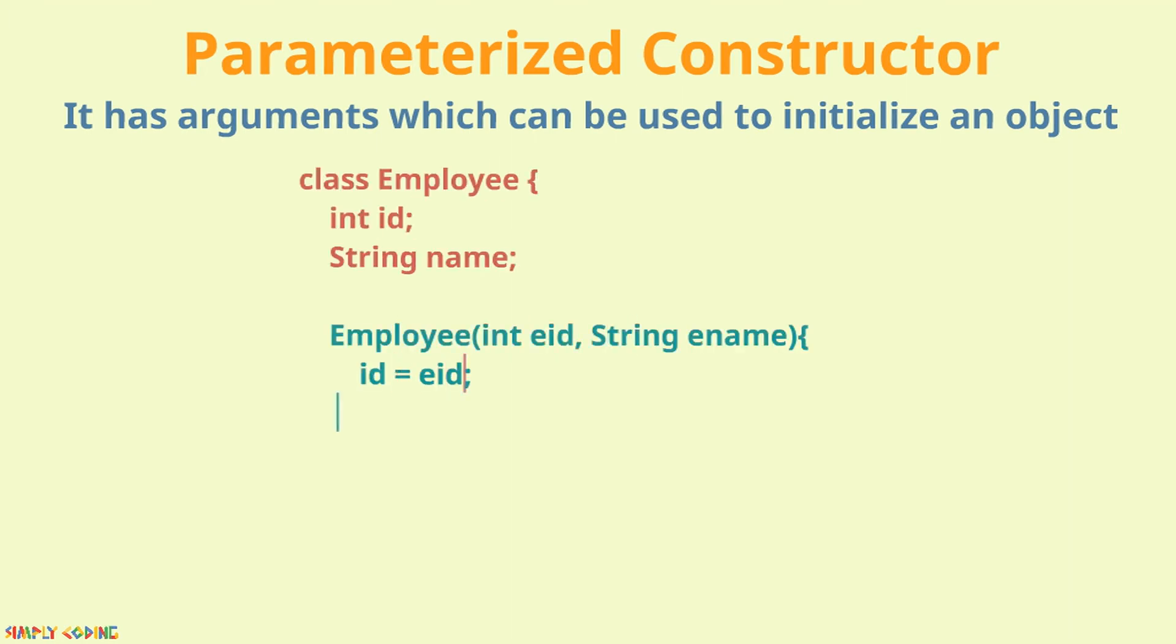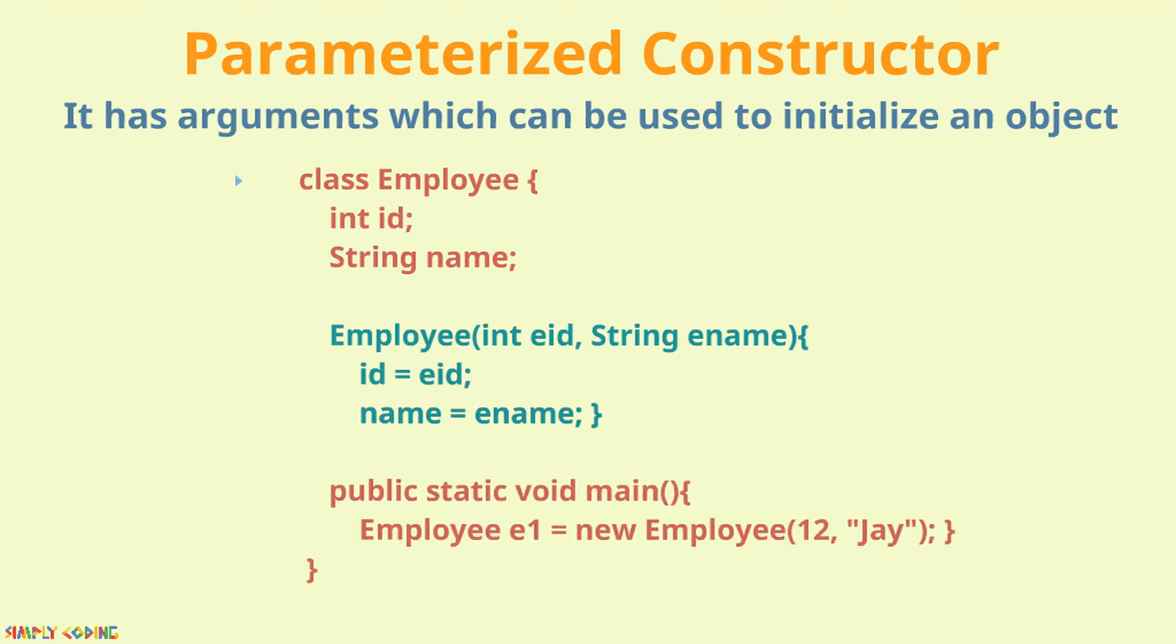Let's see this in an example. Here, in a class employee, we are passing two parameters to the constructor. So when we create a new object, we pass the values with which we want to initialize the object.